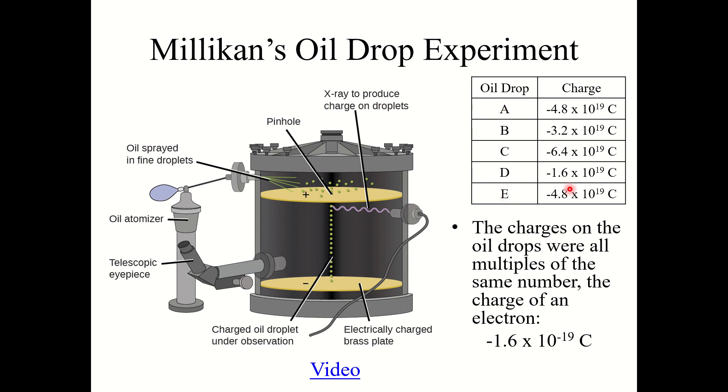So oil drops A, B, C, D, E. He noticed that these oil drops had different charges: negative 4.8 times 10 to the negative 19th coulombs, negative 3.2, negative 6.4, negative 1.6, negative 4.8. Now what he noticed here is yes, these oil drops, they did not have the same charge. However, the charges on the oil drops they were all multiples of the same number. And so he thus concluded that this must be the charge of an electron, negative 1.6 times 10 to the negative 19th coulombs.